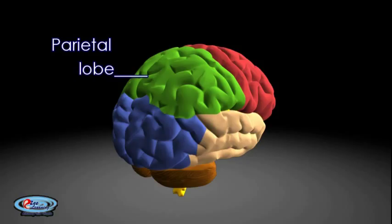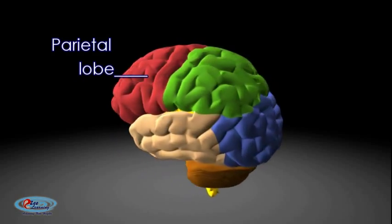For example, it comprises the somatosensory cortex and the dorsal stream of the visual system. This enables regions of the parietal cortex to map objects perceived visually into body coordinate positions. Several portions of the parietal lobe are important in language processing.